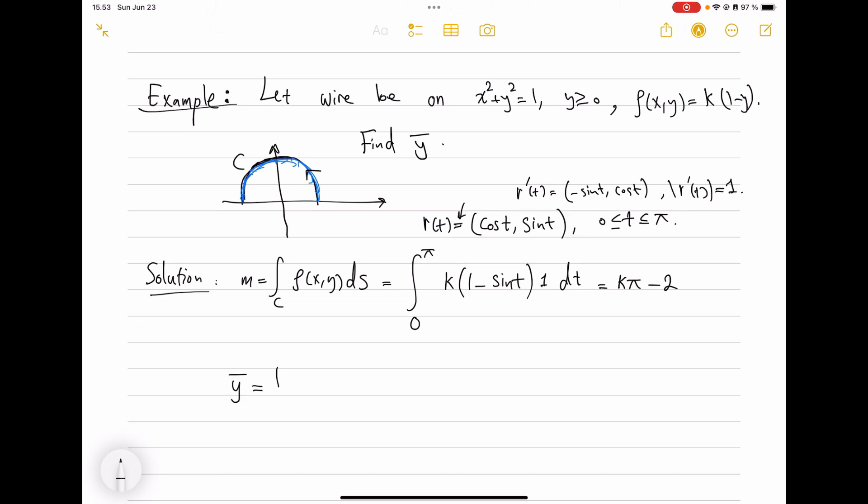Sine of t, cosine—it's symmetric, not anti-symmetric, no cancellation, so it's 2. That will be the mass. And now let's look at the ȳ. You don't need to memorize formulas—to get the y average, you want to integrate y along the curve against the density.